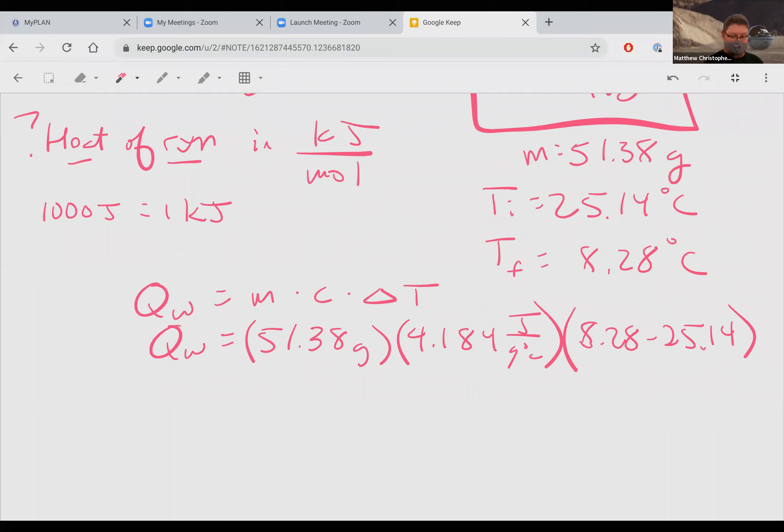Q_W, which is the water's point of view, and 8.28 minus 25.14. Now before we go any further, we may notice that the temperature went down. So the water is getting cooler.